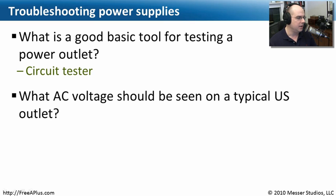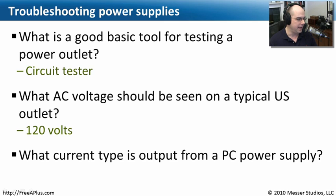Our next question is, what AC voltage should be seen on a typical US outlet? In the United States, the amount of voltage coming out of the wall should be around 120 volts. And if it isn't, we need to call an electrician.